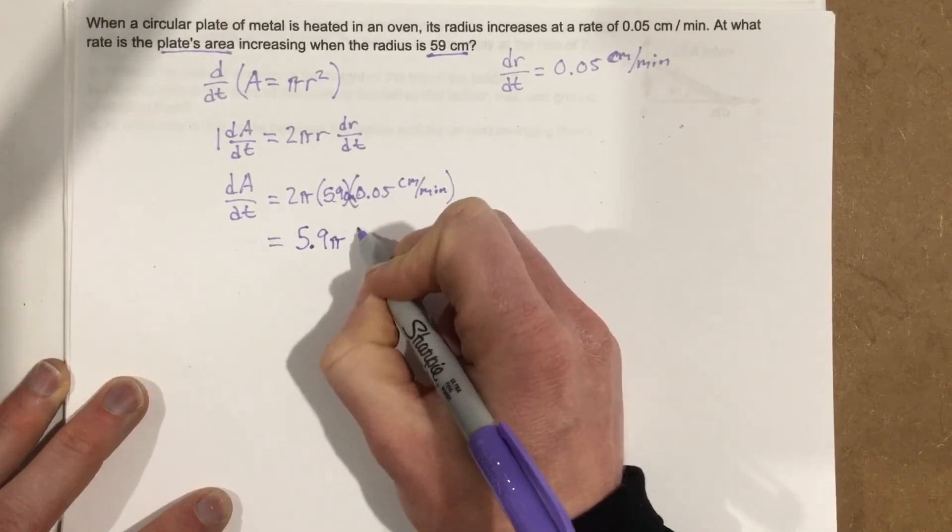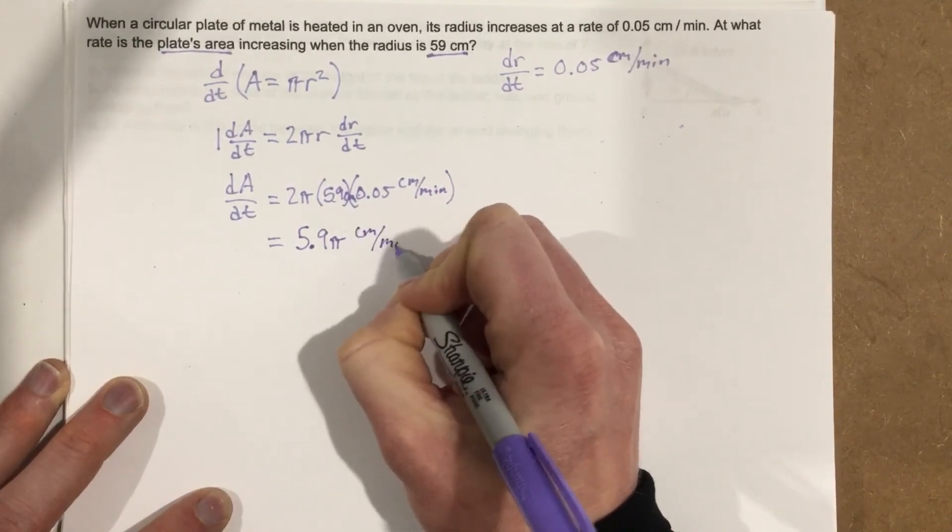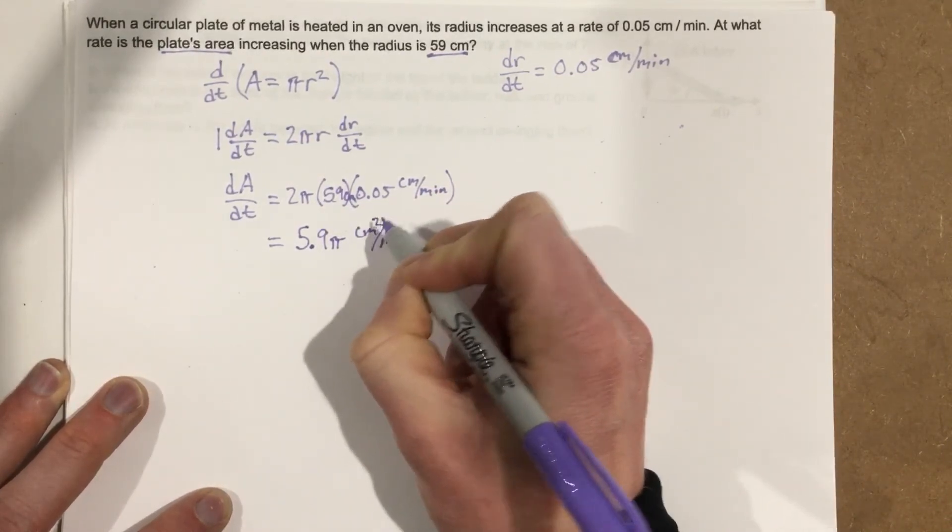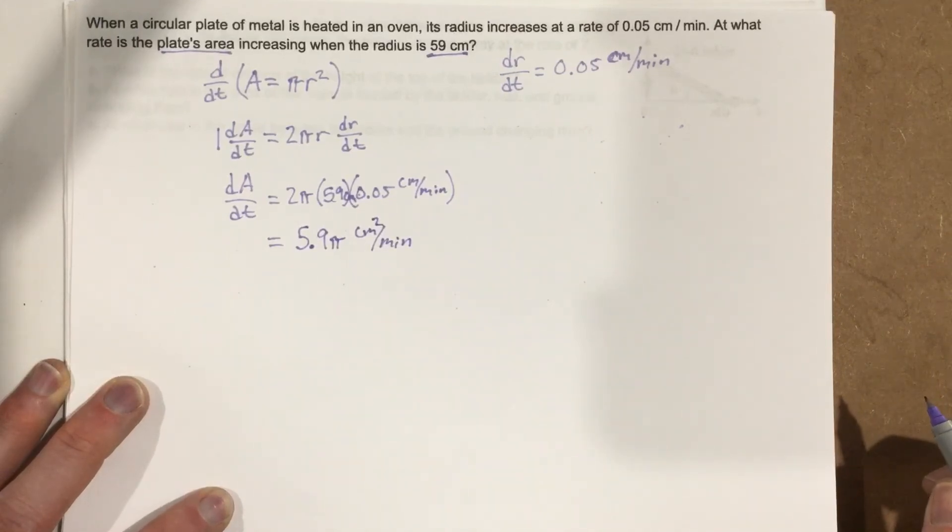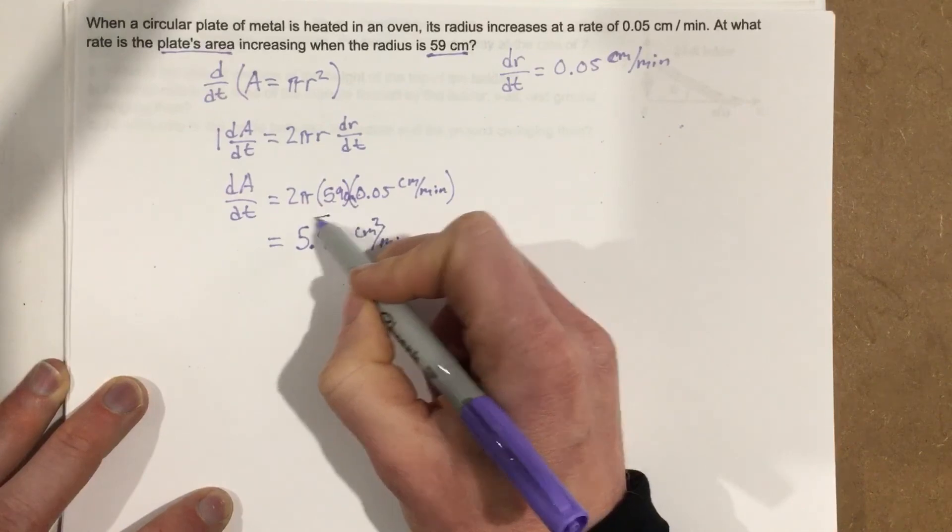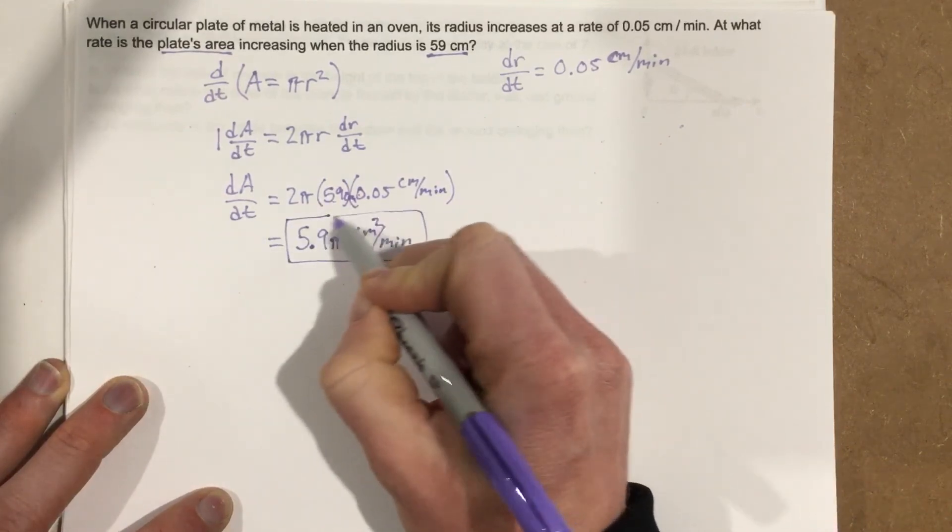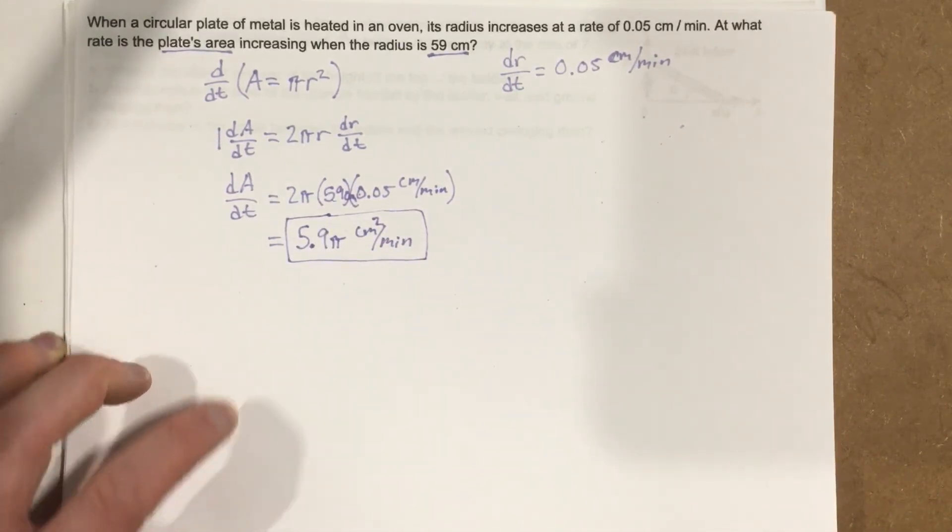And that would be centimeters per minute, centimeters squared per minute. And that is the change in area with respect to time for this problem.